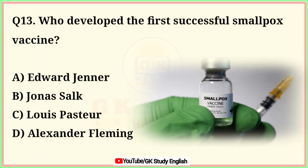Question number 13. Who developed the first successful smallpox vaccine? A. Edward Jenner. B. Jonas Salk. C. Louis Pasteur. D. Alexander Fleming. Correct answer is option A. Edward Jenner.